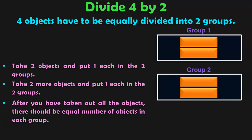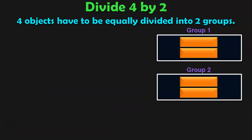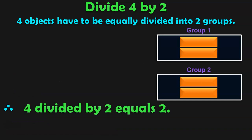How many objects do we have in each group now? There are 2 objects in each group. 4 divided by 2 equals 2. That is 4 objects when equally divided into 2 groups, each group has 2 objects. Let us do more examples to understand the concept of dividing objects into equal groups.